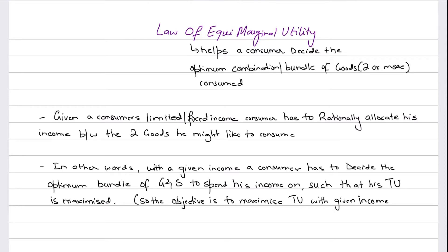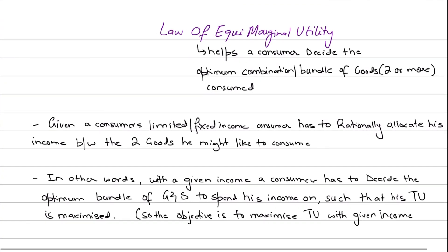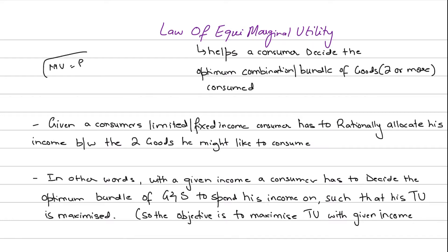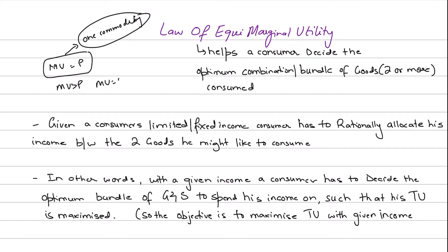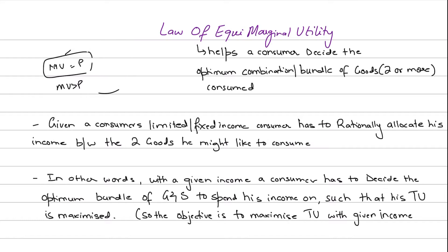We came to the conclusion that if there is one commodity, the consumer would optimize his number of units where the marginal utility for the last unit equals the price paid for that unit. The consumer would go on consuming until marginal utility exceeds the price, and stop when marginal utility equals the price. But this was applicable when there is only one commodity.